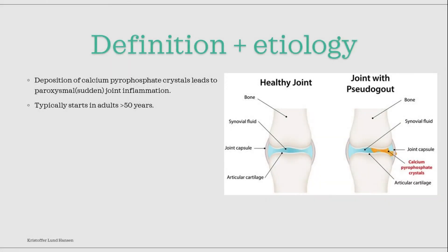Pseudogout is a disease where calcium pyrophosphate crystals deposit in the joint. This can lead to a sudden onset inflammation. Pseudogout typically starts in adults above the age of 50.